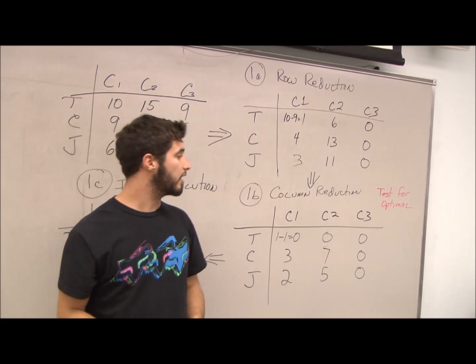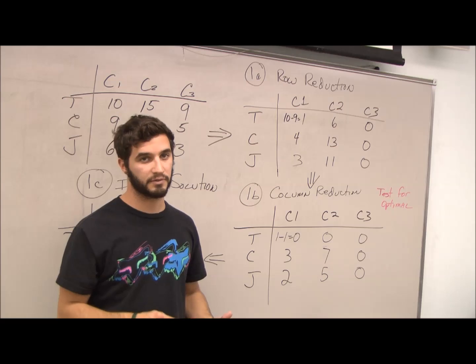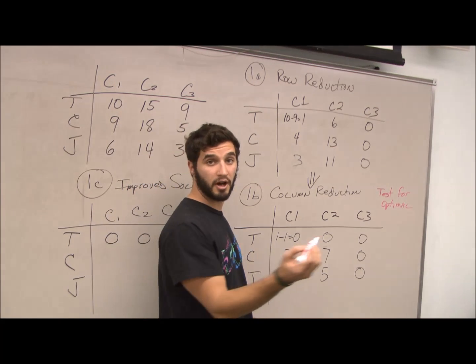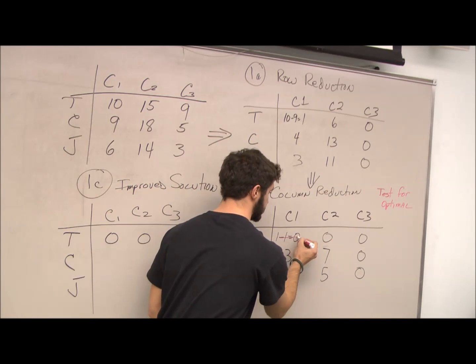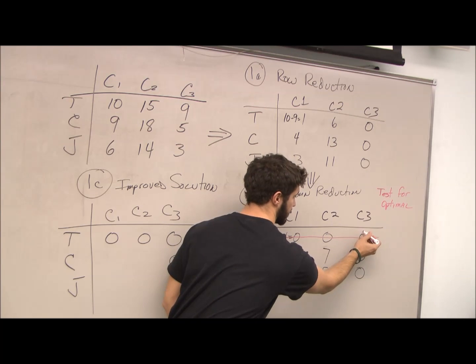So to test for optimal, you have to cross out the zeros with the minimal amount of lines as possible. So this top line here, all zeros across, there's line 1, and these zeros this way is line 2.